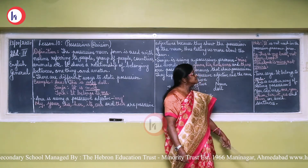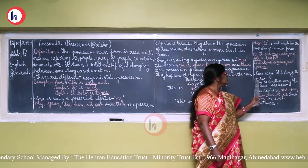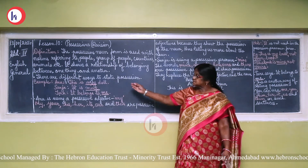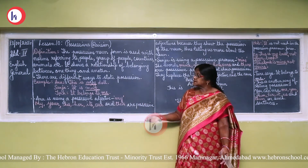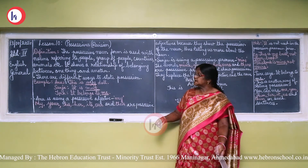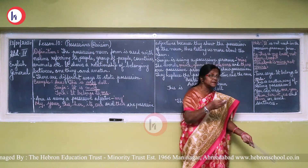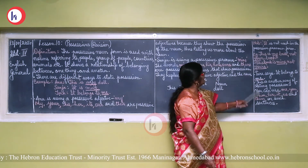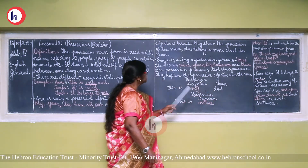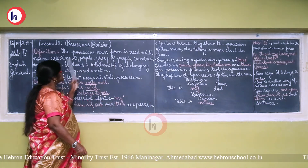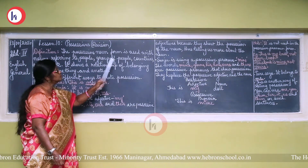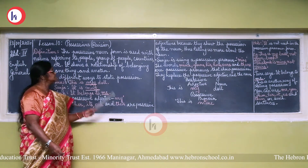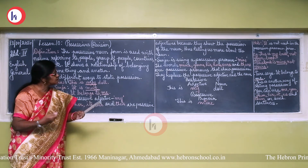So to recap: Anu says, 'This is my dog.' Sanju says, 'It is mine.' And Tara says, 'It belongs to me.' There are three different ways we can express possession. The possessive noun form is used with nouns referring to people, groups of people, countries, and animals, and it shows the relation of belonging.